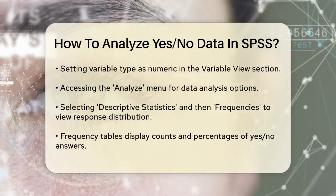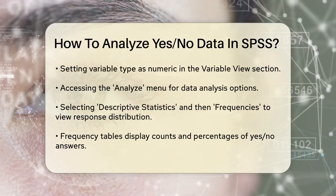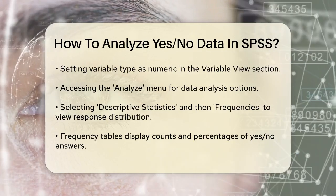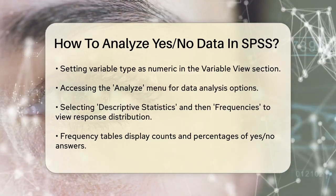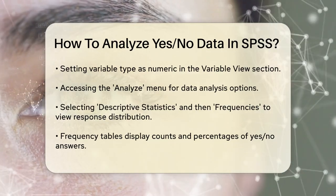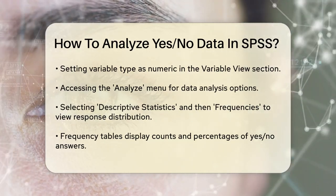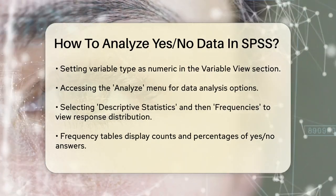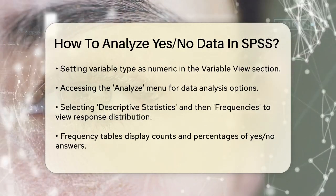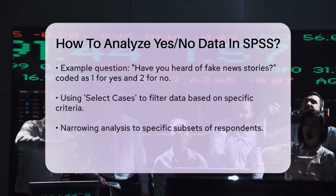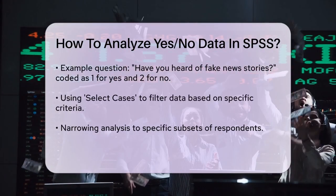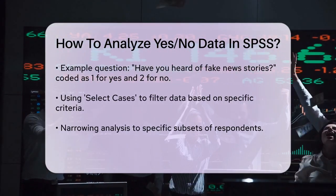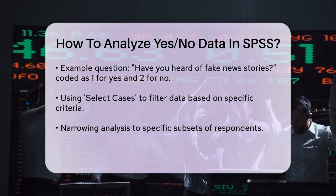For example, if you have a question like, have you heard of fake news stories? And you coded yes as one and no as two, the frequency table will show you how many respondents said yes and how many said no, along with the percentages. This helps you quickly see the overall trend in the responses.